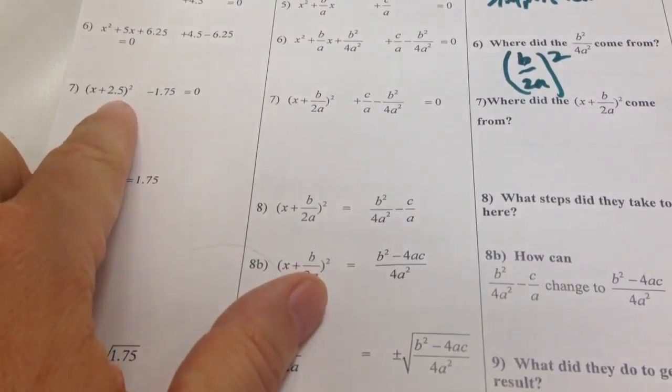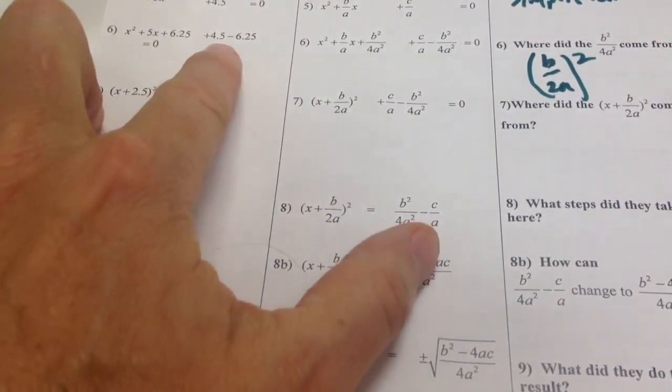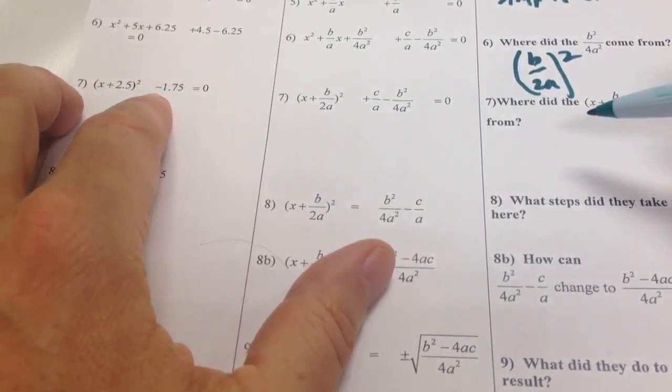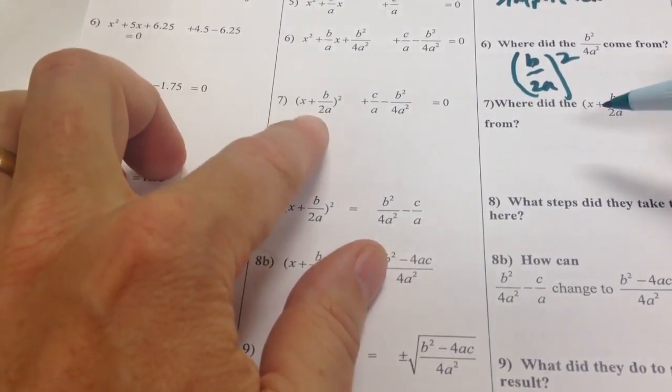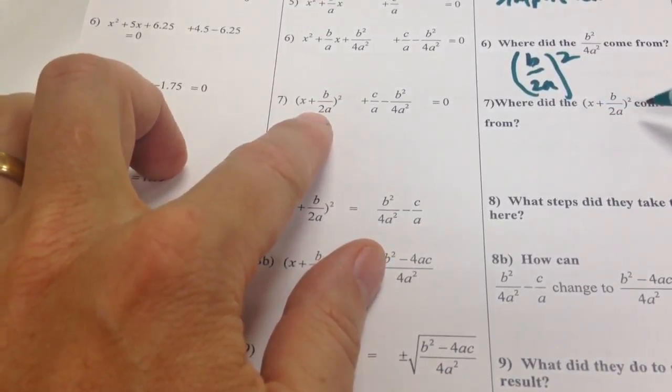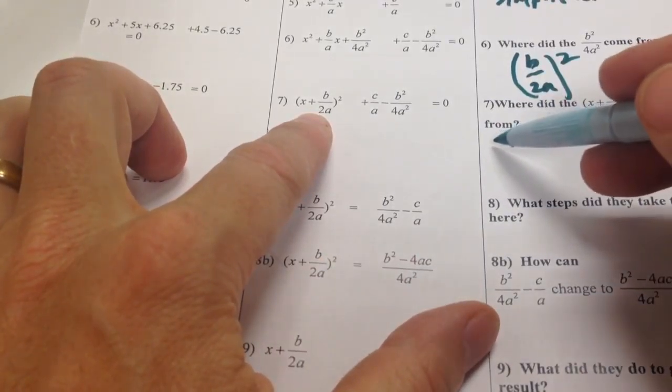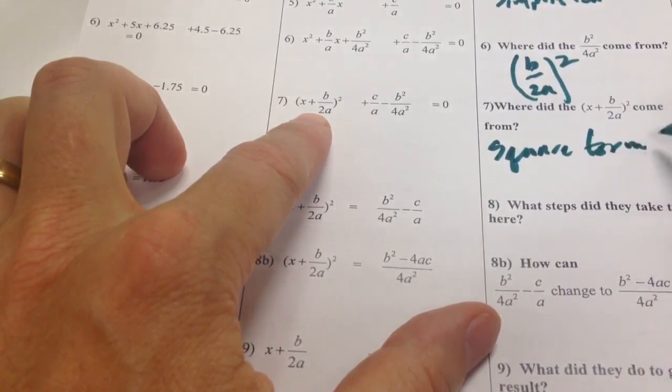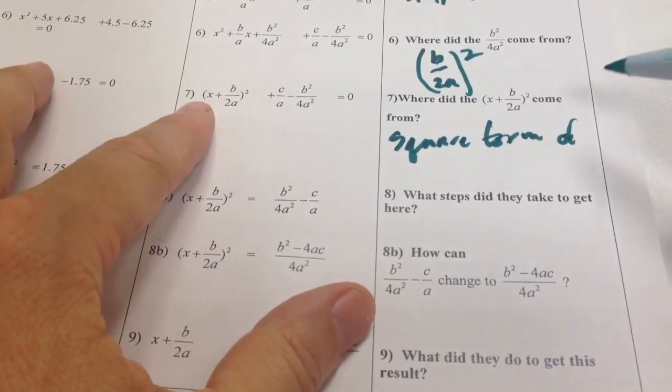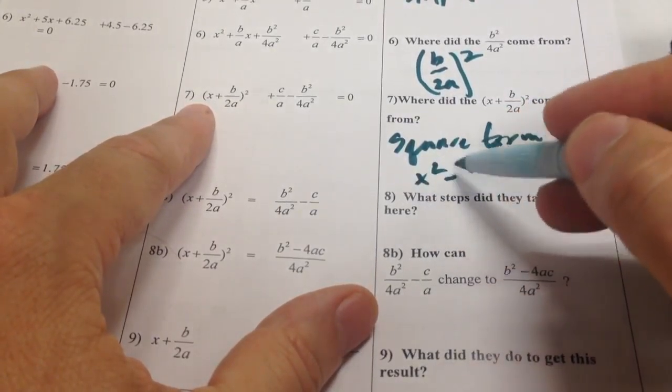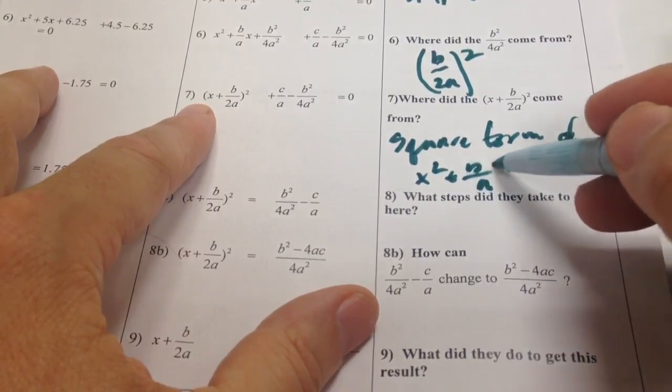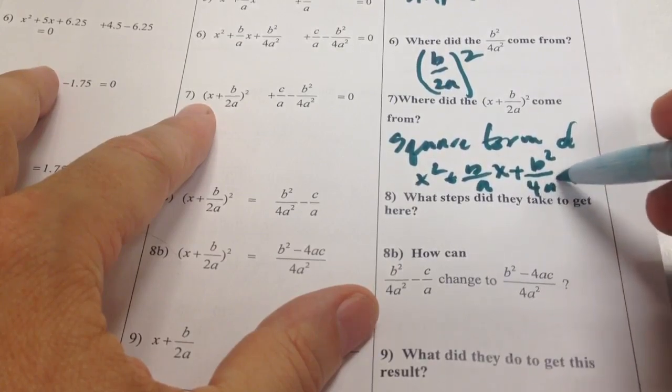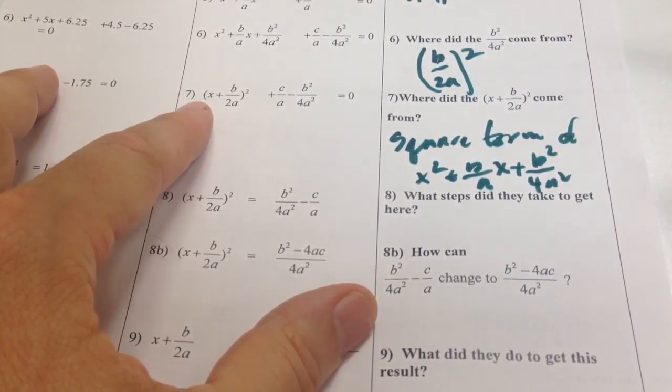The next step, Molly completes the square over here, writes it in square form, combines the 4.5 and the negative 6.25 to get negative 1.75. And so Kyle and Harper are going to do the same thing. They're going to rewrite this in square form. And the (x + b/2a) is the square form of x² + (b/a)x + b²/4a². Sorry for the scrawl. Got a broken hand and a big fat marker.